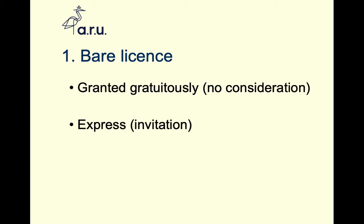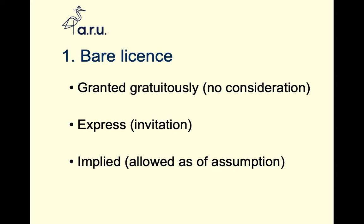It's capable of being express — you can invite somebody onto your land, and that would be an express bare license. But it can also be implicit: just by having an open gate, a footpath, or some form of access point that isn't a shut door, there is an implication that you don't mind people walking on what's technically your property. Obviously, if you want to withhold that permission you would need to make it explicit — through locking the gate, or through signage — that people would not be welcome, and those who cross that threshold would be trespassers.